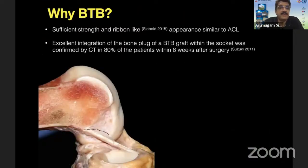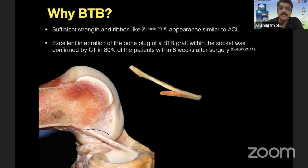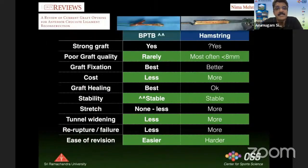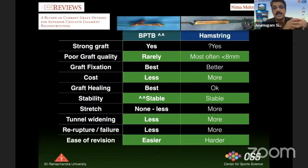Why is the BTB graft preferred? It has sufficient strength and, as described by Sibol, it has a ribbon-like appearance similar to the native ACL. There is excellent integration of the bone plug in the socket as early as eight weeks after surgery, confirmed by many CT scans. In a meta-analysis comparing the most popular grafts — hamstring and BTB — the BTB scores on all points: stronger graft, poor graft quality is rarely seen with BTB, whereas hamstring very often ends up at eight millimeters, especially in our population. Graft fixation is best, cost is less, and graft healing is better.